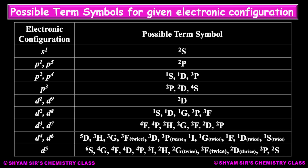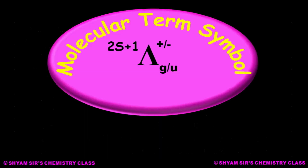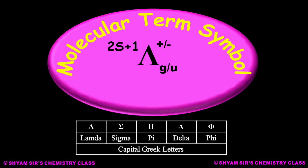Now let us move to molecular term symbols, specially for diatomic molecules. The molecular term symbol is represented similarly to the atomic term symbol, but slightly differently: 2S+1 Λ with a superscript of +/− and a subscript of g or u. I will show you the capital Greek letters we will be using: lambda (Λ), sigma (Σ), pi (Π), delta (Δ), and phi (Φ).